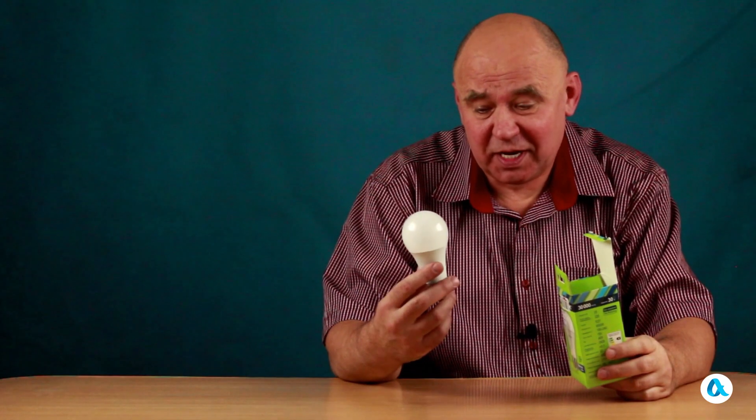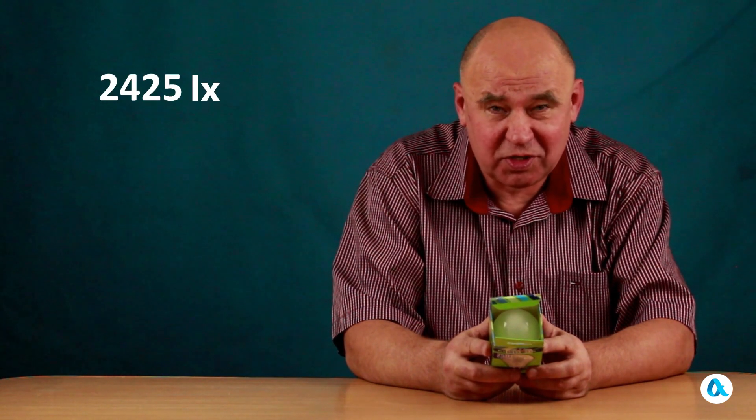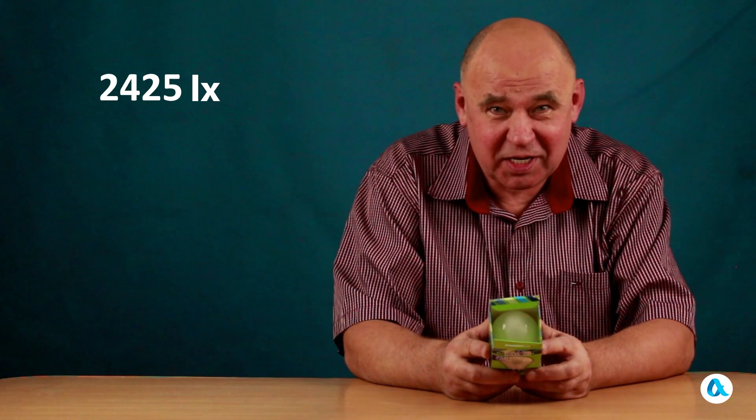Now let's have a look at this LED lamp. On the packaging, it is stated that the light flux of the product is 2425 lumens according to the information provided. But we know how to convert light intensity to candelas, divide by 4π, I get 192 candelas.